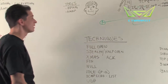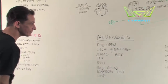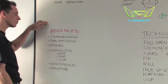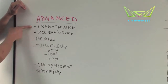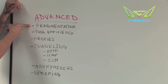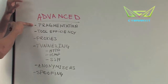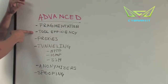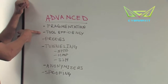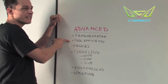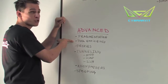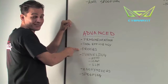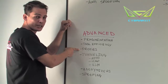Moving into advanced concepts: we start doing intrusion detection evasion while scanning. We can use fragmentation to throw off IDS signatures. Tool efficiency matters — writing command line options so your technique does exactly what you want and captures results most efficiently. We can also use proxies to hide ourselves as the source so our target doesn't know who we are.